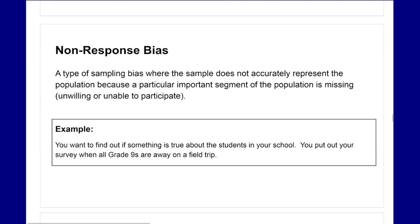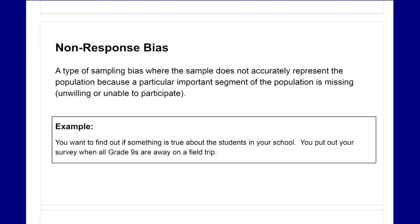Non-response bias is a type of sampling bias where the sample does not accurately represent the population because a particular or important part of the population is missing — either unable or unwilling to participate. For example, you want to find out something about students in your school and you put out your survey when all grade nines are away on a field trip. All grade nines are unable to participate, so there's a non-response bias — no response from that group of the population.